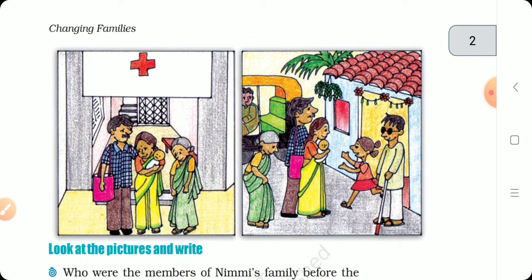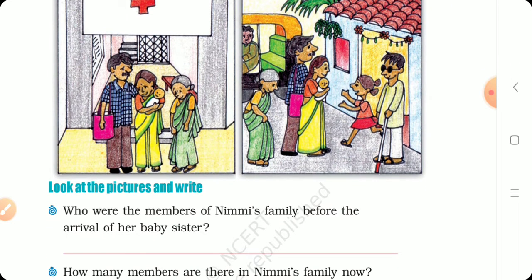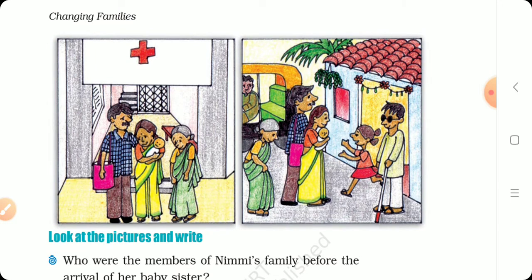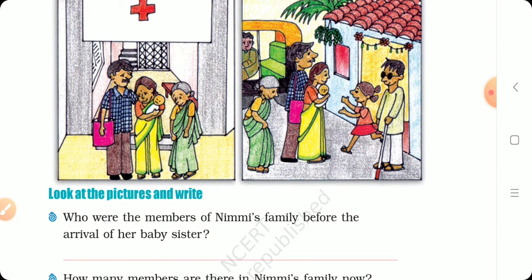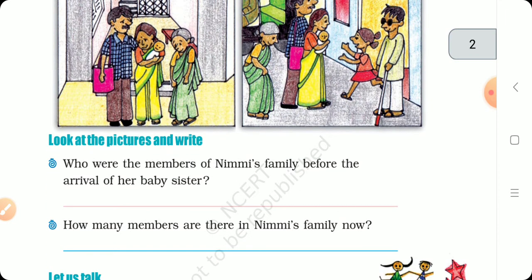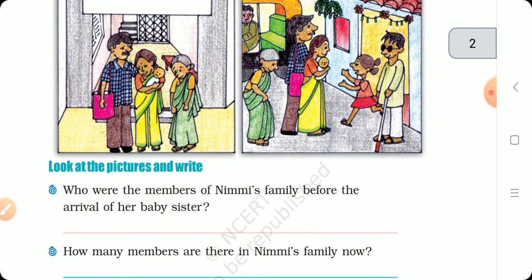Changing Families. Look at the pictures and write. In the first picture there is his grandmother, his mother, and his father. He is going from hospital to home. Who were the members of Nimi's family before the arrival of the baby sister? The mother, grandmother, and Nimi.